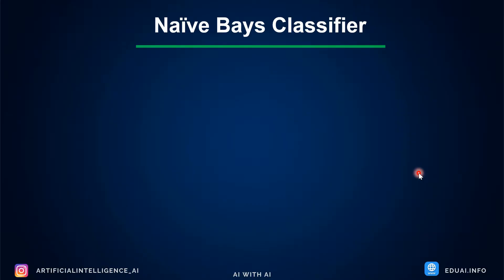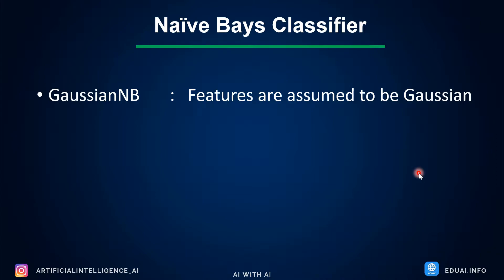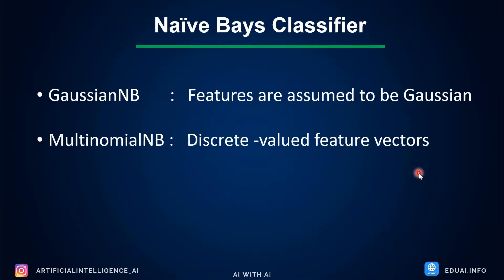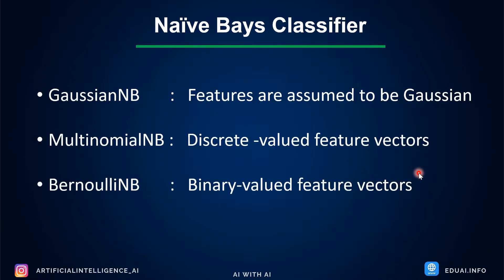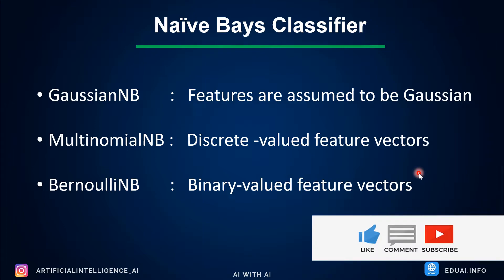There are three types of Naive Bayes classifier. The first one is Gaussian Naive Bayes, the second one is Multinomial Naive Bayes, and the third one is Bernoulli Naive Bayes. The important thing here is to understand which one you should use based on the given dataset — that is what is really important for us to understand.